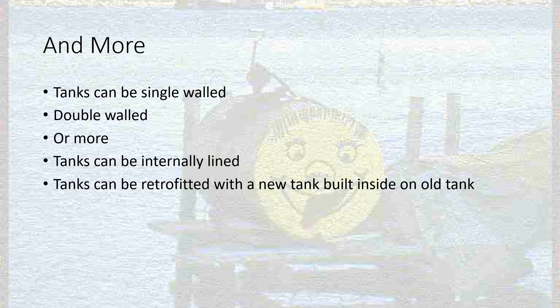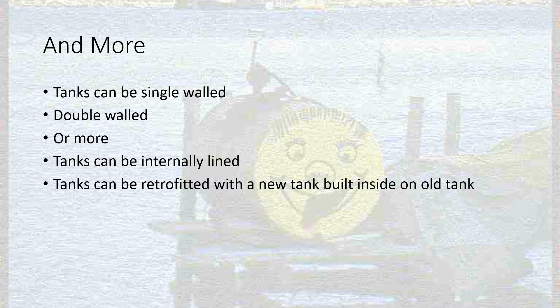Tanks can be single-walled — just one wall. With the new federal regulations that came into effect in 2015, they have to be double-walled. Some states, like California and Texas, already required double-walled tanks through state regulations prior to 2015. There are also triple-walled tanks — some hazardous substance storage locations require triple walls to help ensure no leaks. The number of walls is really only limited by your imagination; tanks can have four, five, or six walls.